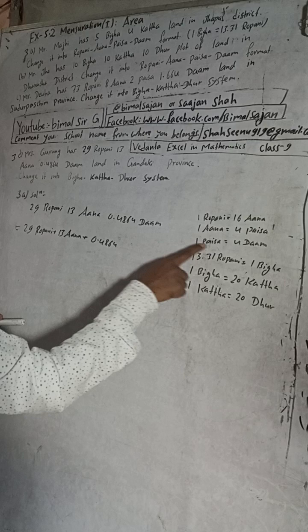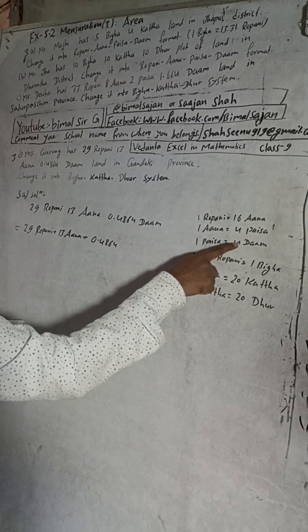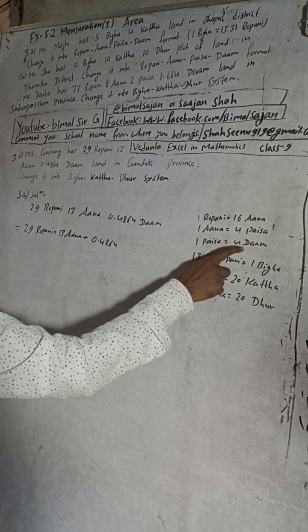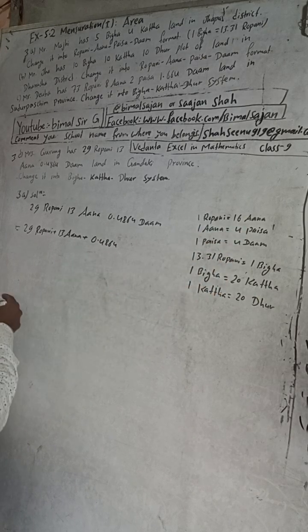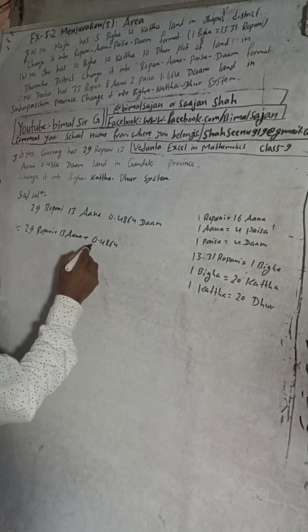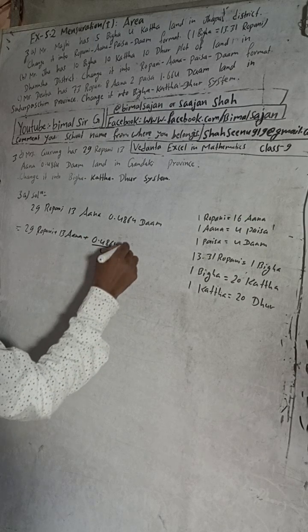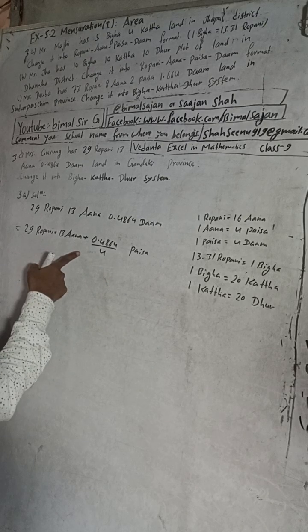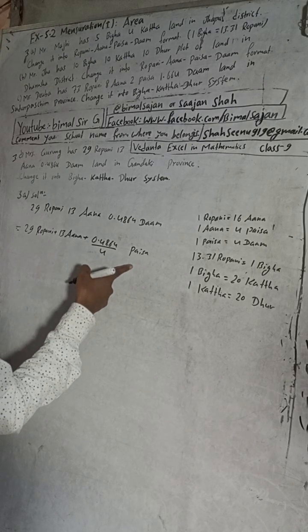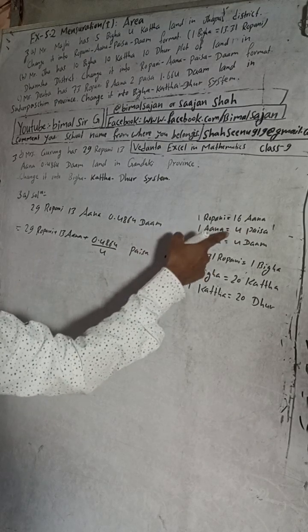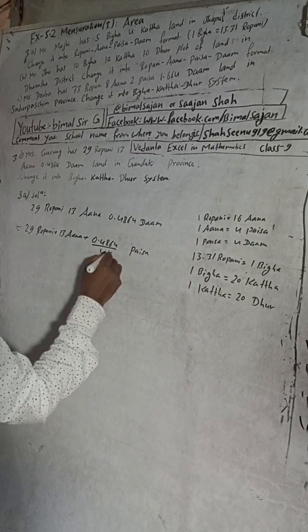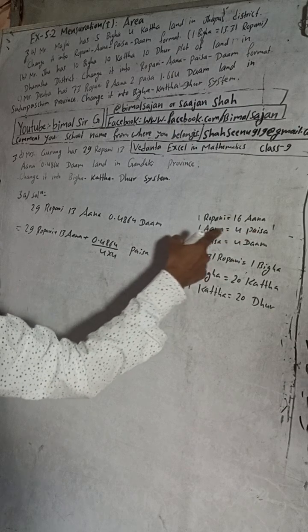When you divide, you have to know this formula to convert, otherwise we can't do that. So we can see there, 4 Dham is equal to 1 Paisa. So when we divide this Dham by 4 we will get here Paisa. And there is not any Paisa, again we have to convert this Paisa into Ana. So 1 Ana is equal to 4 Paisa.